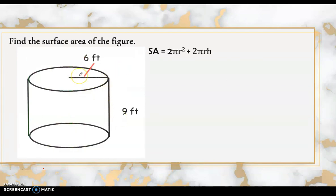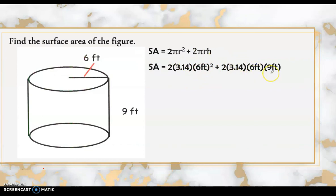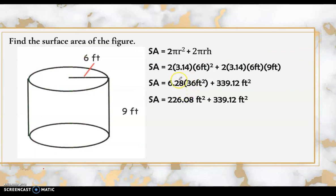Next: find the surface area of a cylinder where the height is 9 feet and the radius is 6 feet. Following the formula, substitute 3.14 times 6 squared times 2, plus 2 times 3.14 times 6 times 9. 6 squared is 36; 36 times 6.28 is 226.08. The second part gives 339.12 square feet. Adding them: 226.08 plus 339.12 gives a surface area of 565.2 square feet.